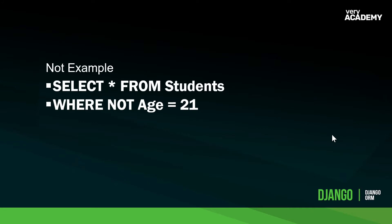Take a look at this simple SQL example with NOT: SELECT all FROM students WHERE NOT age equals 21. Essentially what we're doing here is filtering out anyone who is 21 — we're not going to show or return any students whose age is 21.